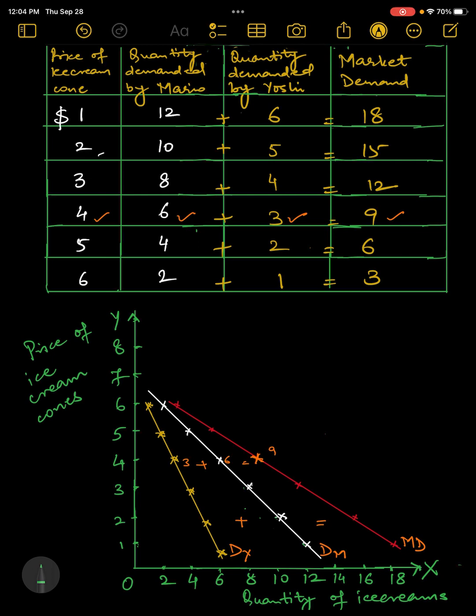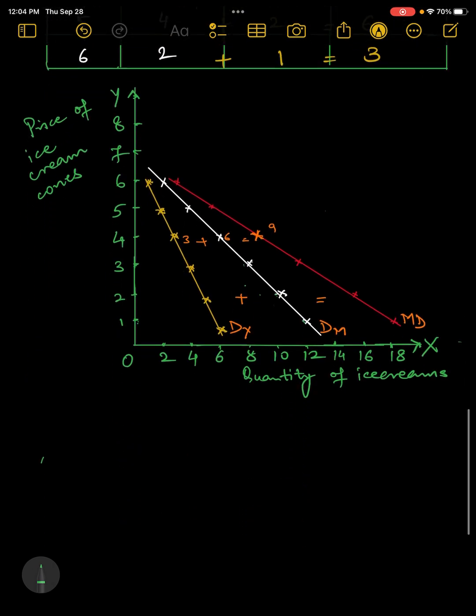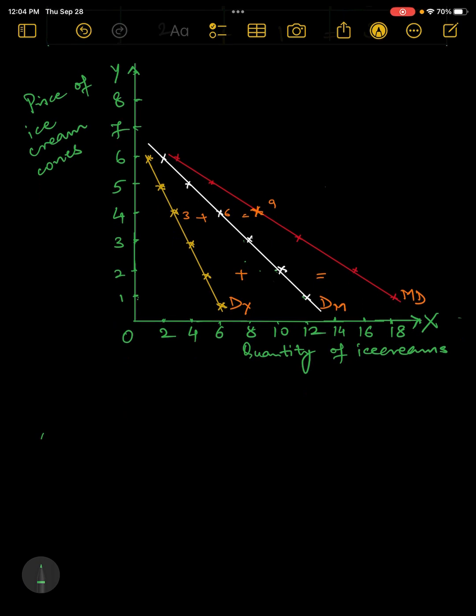Also note that you can do this in three separate diagrams as well. So instead of I have drawn all the three curves in the same diagram, which is also fine, or you can make three diagrams. So one graph, second and the third one simultaneously together where you are going to show demand by Mario on one, then demand of Yoshi on the other, and then total market demand, which would be the sum of these two together here. So that's also acceptable.